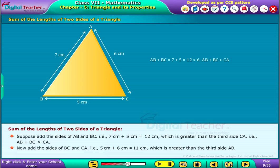Now, add the sides of BC and CA. That is, 5 cm plus 6 cm, that is equal to 11 cm, which is greater than the third side AB.